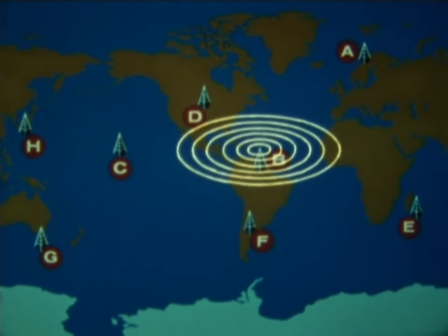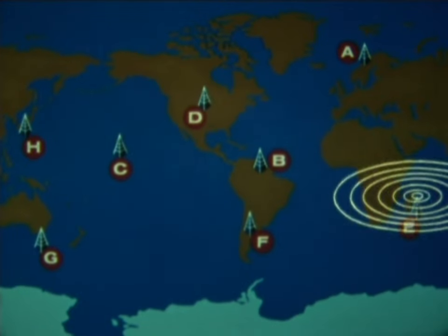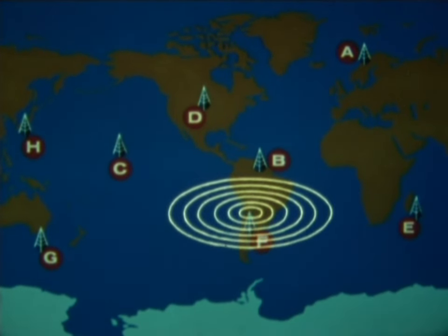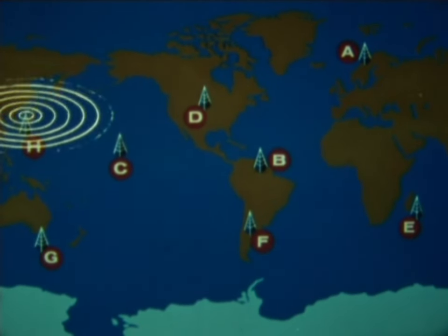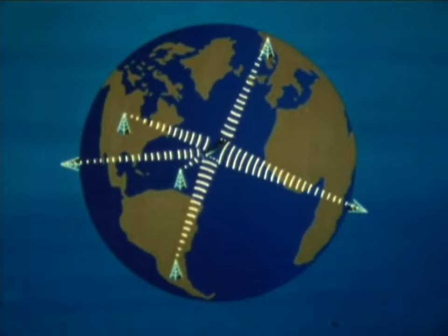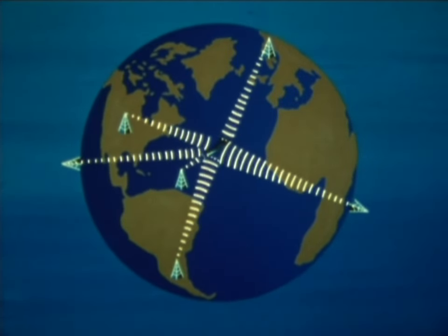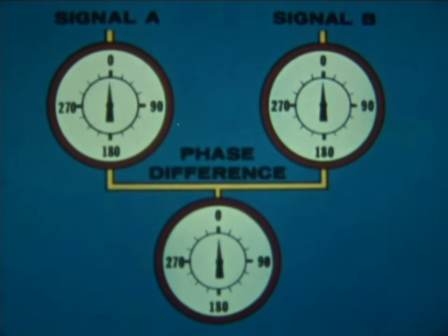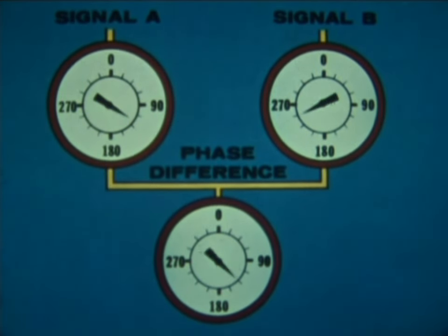But no matter what method of identification is used, the important point to remember at this stage is that the transmitters are sending out signals in a time-shared sequence, and that every omega receiver is picking up signals from a number of transmitters. These receivers are not only receiving the signals, but they're also comparing them to determine the phase difference between them.